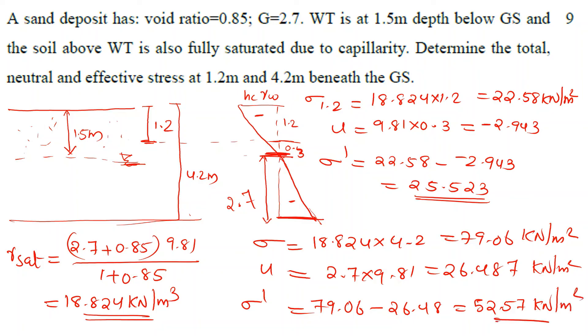The key point is that capillary pore pressure is negative above the water table and positive below. We will work out the next topic in the next session. Thank you.